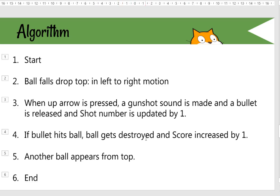If the bullet hits the ball, the ball will get destroyed — it will disappear and the score will increase by one. As the ball disappears, another ball will appear from the top and the game will continue. This is our basic algorithm before we move into the actual program.